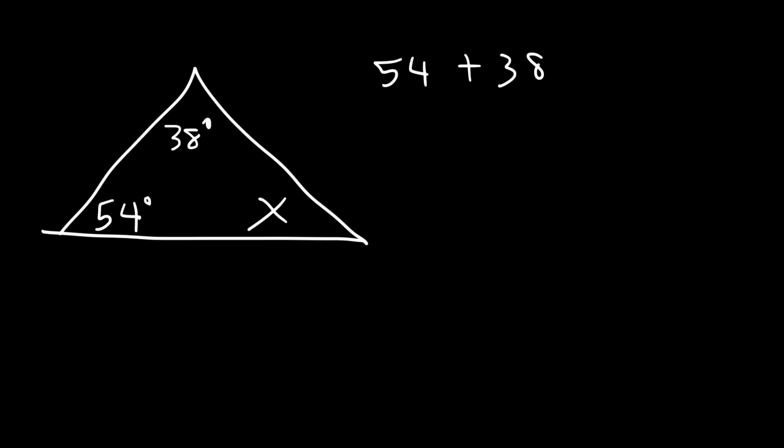So knowing that, let's say if you have this triangle, and this is 54 degrees, and this is 38 degrees, and we'll call this x. What is the value of x in this problem? So you know that the three angles, 54, 38, and the third angle which is x, they have to add up to 180. So now you could find the value of x. So we just got to do some math at this point. 54 plus 38, that's 92.